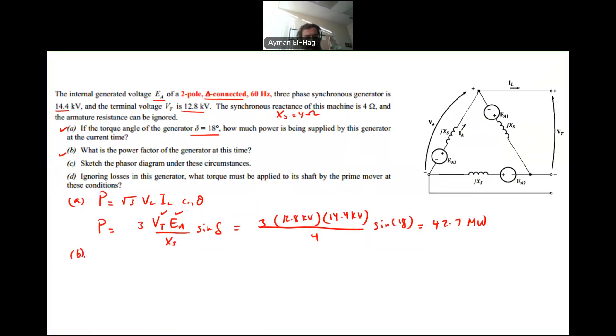So we need to find IA. This IA, basically, what is it? Now, if you look at the model of the generator, this is Xs, this is your EA, and this is your Vt, and this is your IA. So I'm just looking at one of the phases. So your IA is equal to EA minus Vt divided by jXs.